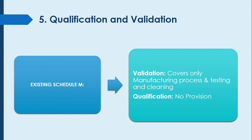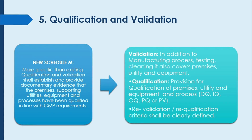In Proposed Schedule M, the validation scope also increases — in addition to manufacturing process, testing, and cleaning, validation requirements for premises, utilities, and equipment are added. Qualification requirements now clearly state that for utilities, premises, equipment, and processes, you must conduct Design Qualification (DQ), Installation Qualification (IQ), Operational Qualification (OQ), and Performance Qualification (PQ). You also have to define re-qualification and re-validation criteria and periods as per Proposed Schedule M.